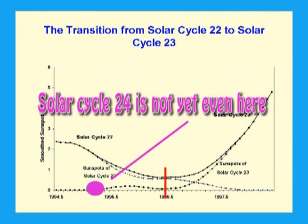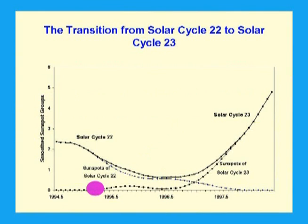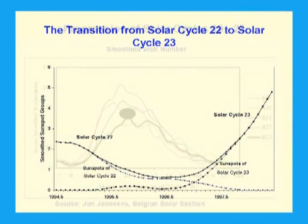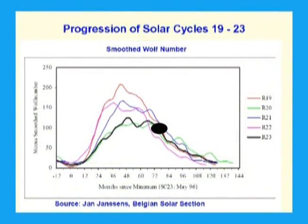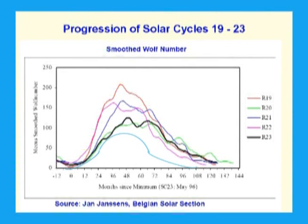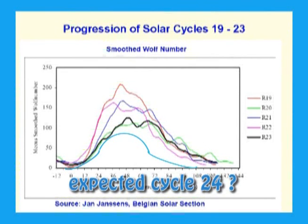Large solar cycles usually arrive early, and small solar cycles late. If the observational rule regarding the relationship between the first sunspot of the new solar cycle and the timing of solar cycle minimum holds, then solar cycle 23 will be at least 12 years long. It also follows that the longer the delay till the month of solar minimum, the weaker the amplitude of solar cycle 24 is likely to be.